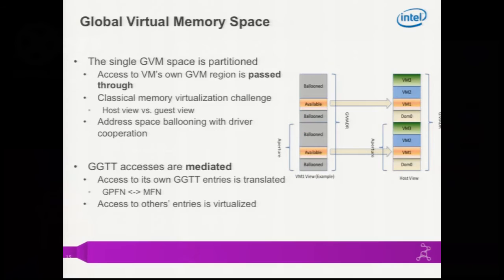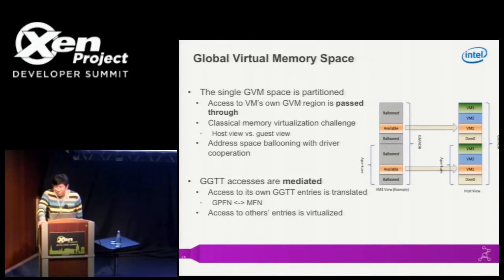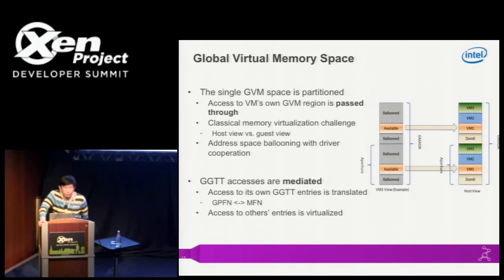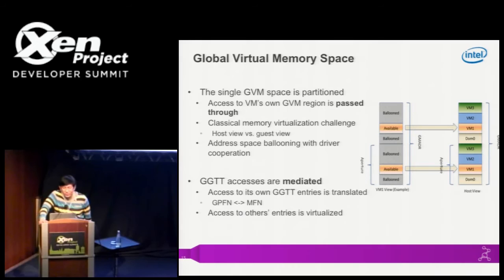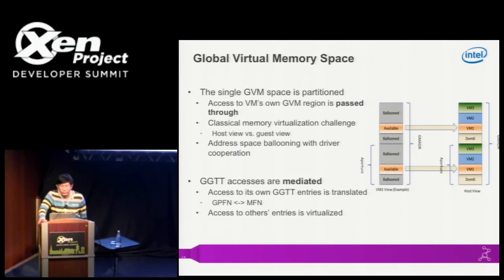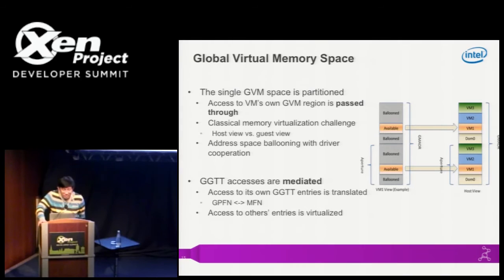For the global virtual memory space, we partition this space among the virtual machines. We use a ballooning technique to achieve this partition. The difference compared with general memory ballooning in domain zero is: in general ballooning you ask 'give me four megabytes of memory,' while for the graphics virtual memory space, we say 'give me four megabytes of memory starting from this specific address.' This way each VM can only access its own portion of the resource.